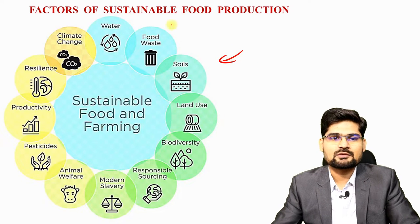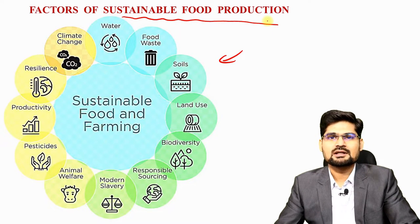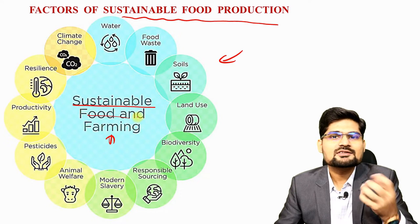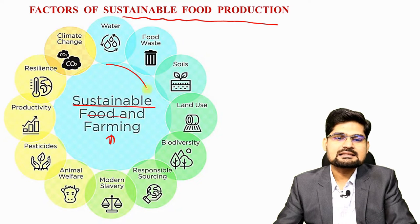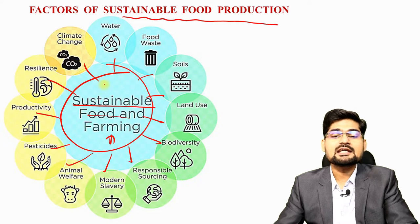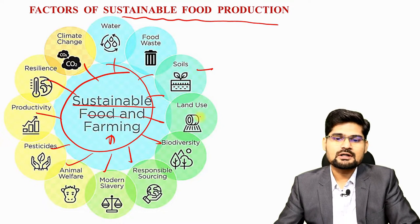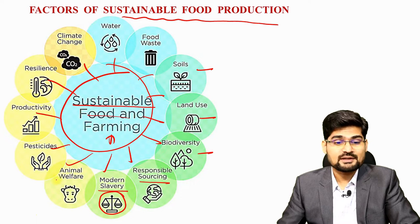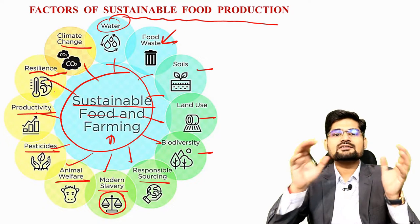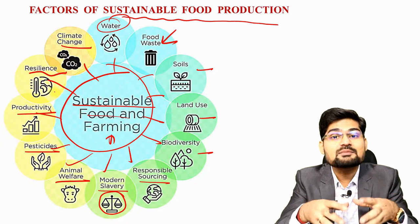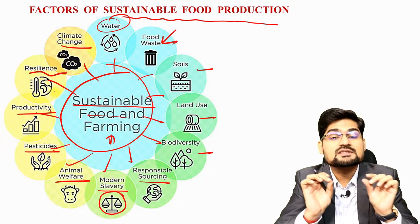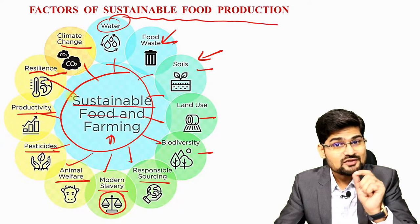Now let's look at this diagram on factors for sustainable food production. This is at the production end. What factors are associated with sustainable food and farming? This is a cycle — a circle in which all components are exactly linked. Each one plays a vital role. From soil to land use to biodiversity, laborers as a factor of production, animal welfare, pesticides, productivity, resilience, climate change, water, and food wastage — all these factors together contribute towards food production and sustainability, which is essential for food security.